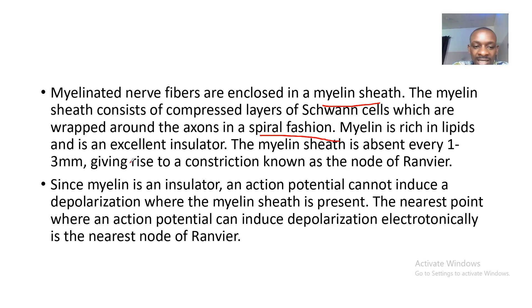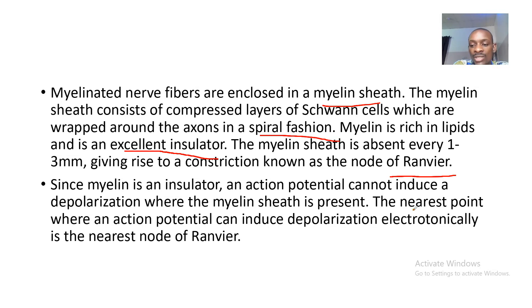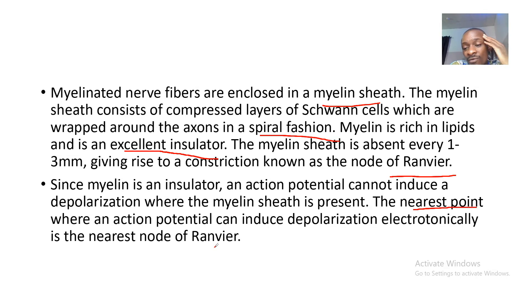The myelin is rich in lipids and is an excellent insulator. The myelin sheath is absent every 1 to 3 mm, giving rise to a constriction known as the node of Ranvier. Since myelin is an insulator, an action potential cannot induce depolarization where the myelin sheath is present. So the nearest point where an action potential can induce depolarization electrotonically is the nearest node of Ranvier.